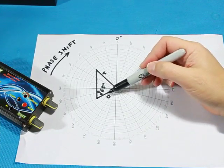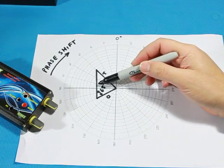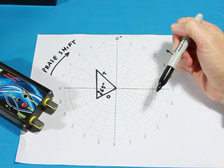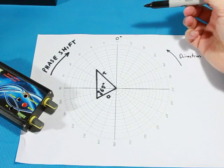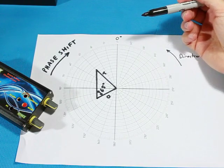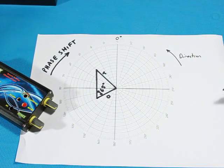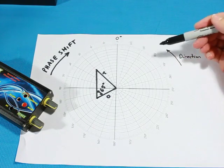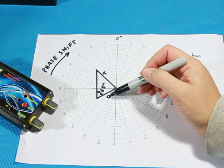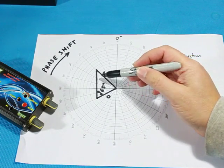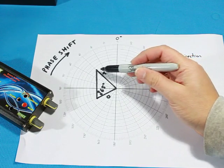So given the angle of 65 degrees, we can now determine the location of the correction weight. And this is how it's done. First of all, you need to determine the phase shift direction. Now, the phase shift direction is essentially the shift between from the original vibration vector to the trial weight vector.